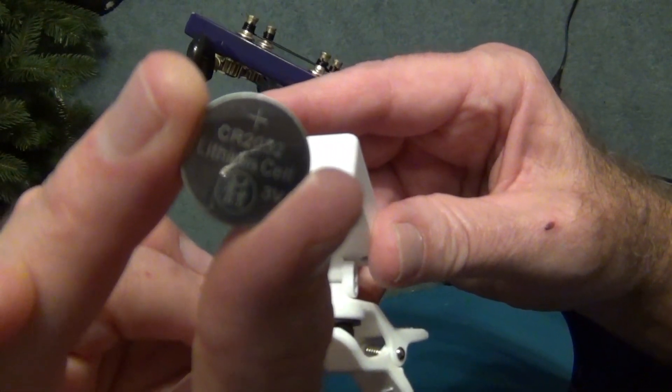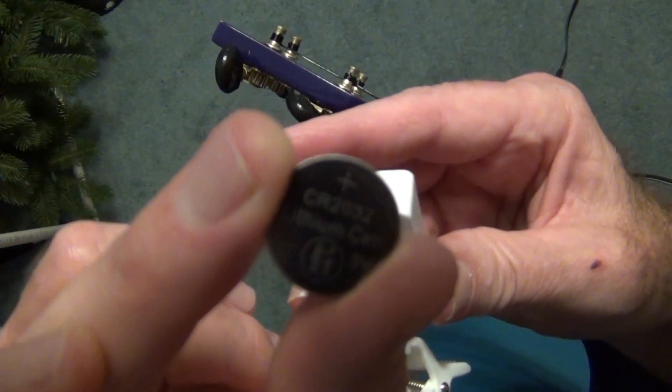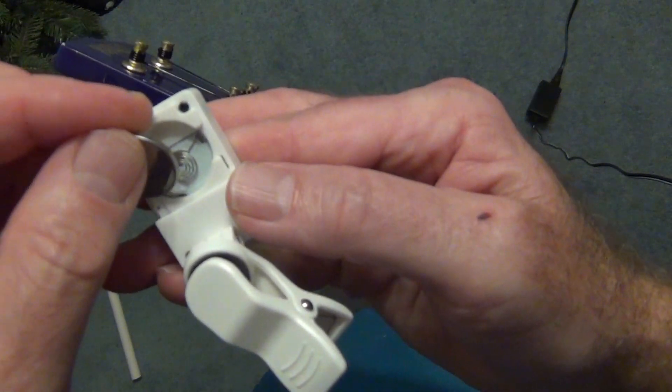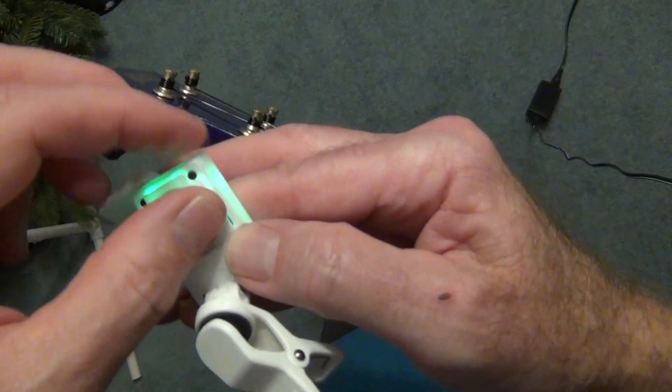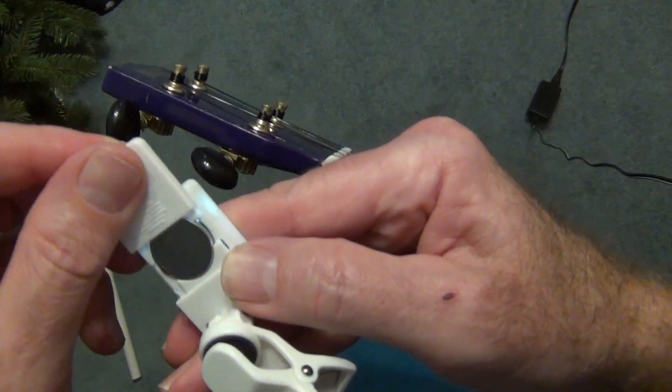So first of all we have to put the battery in. It's a CR2032 if you need to put a new one in. So you have to slide the cover up and off and then you're going to put the battery in with the wording facing up. Put the cover back on.